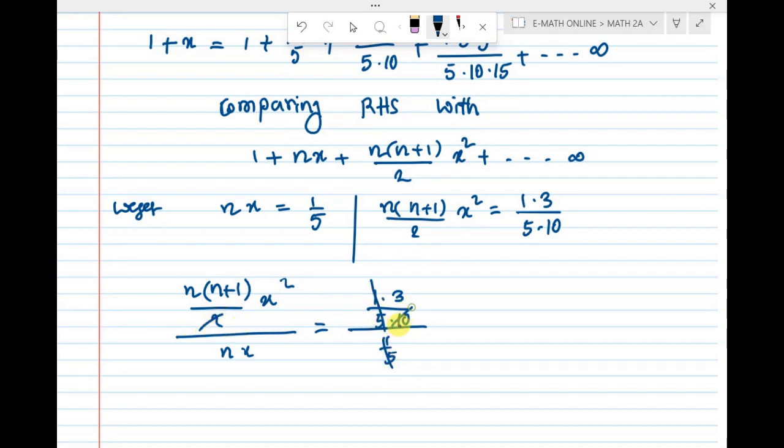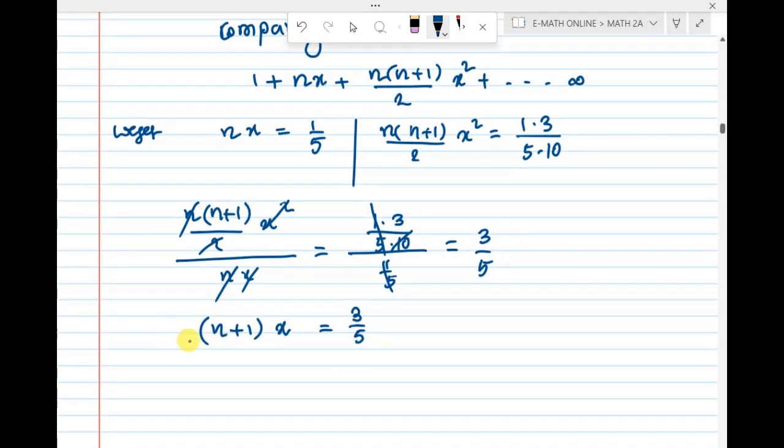1 by 5 cancel, 2 cancel in 10. So it was 3 by 5. nn got cancelled, x square got cancelled. Therefore, n plus 1 into x equal to 3 by 5.